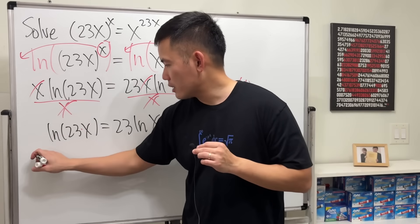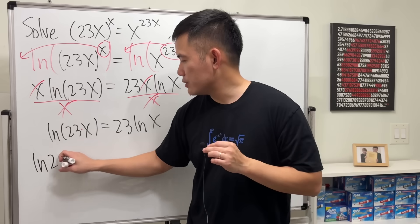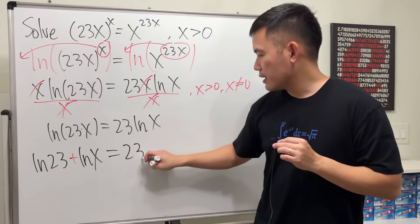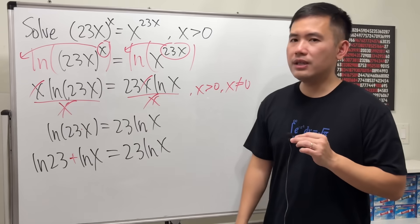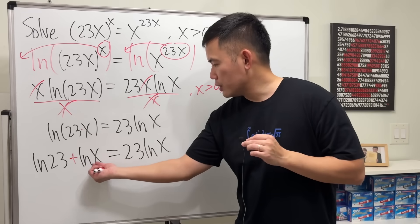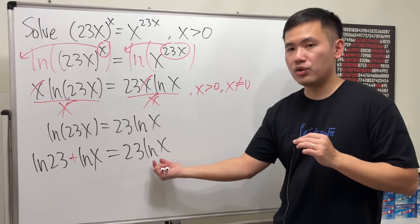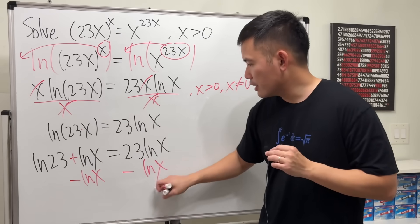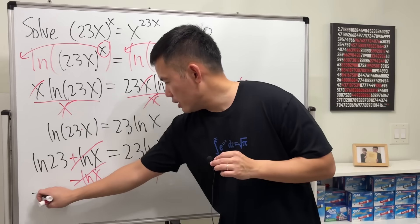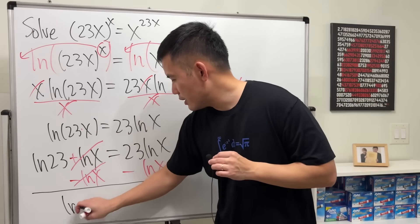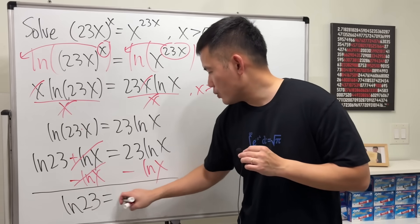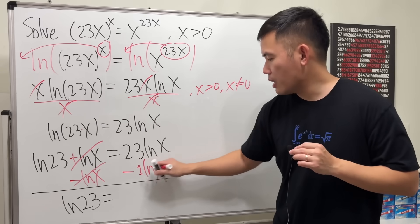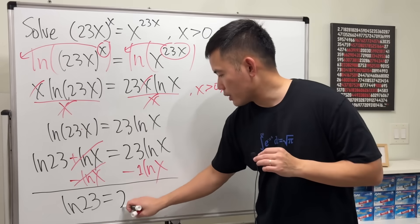Once we break it apart, it becomes ln(23) + ln(x). The reason that we want to do that is now you see we have ln(x) just like this, so we can subtract ln(x) on both sides. This and that cancel, and we will just have ln(23) = 23ln(x) - 1ln(x), so we end up with 22ln(x). Then we can divide by 22 on both sides.